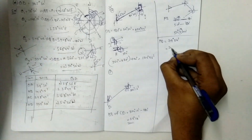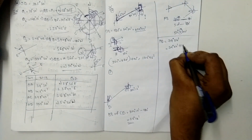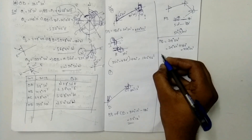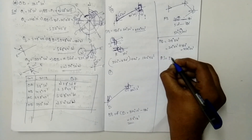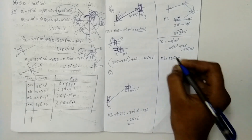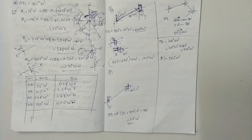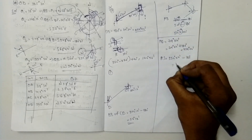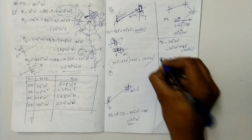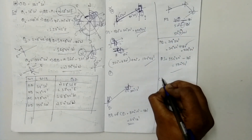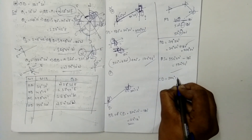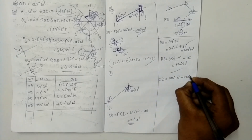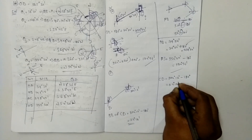So: PQ fore bearing 79°24' plus 180° equals back bearing 259°24'. RS fore bearing 354° minus 180° equals back bearing 174°56' (corrected: 174 degrees). CD fore bearing 204°12' minus 180° equals back bearing 24°12'.